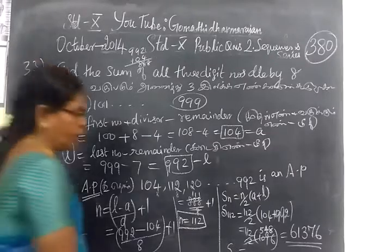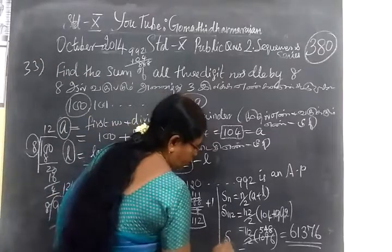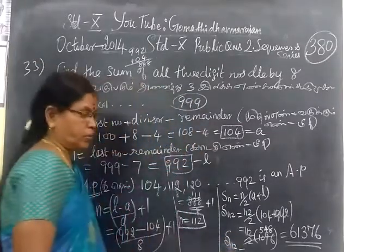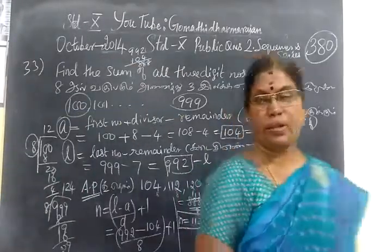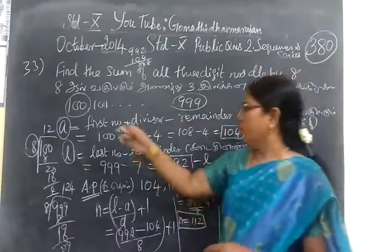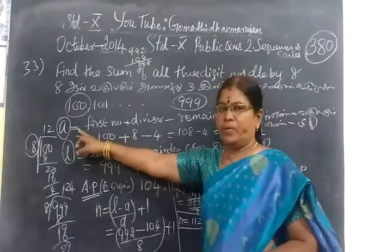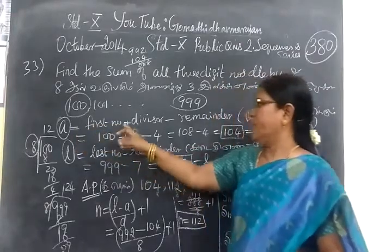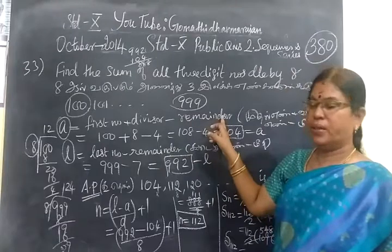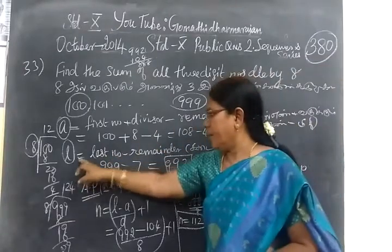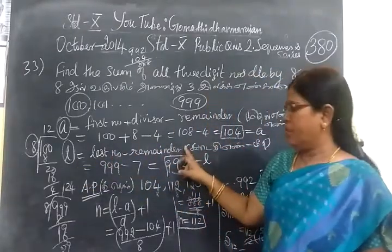So the value of the sum is equal to 61376. In this question, you find the value of A first, first number plus divisor minus remainder. To find L, last number minus remainder.